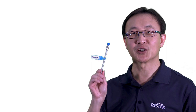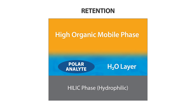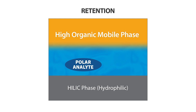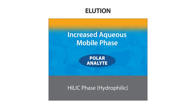So now you get a new HILIC column and are very eager to develop or run a HILIC analysis. What should you do at the very beginning? As we discussed previously, for HILIC-based LC separation, the initial condition is under highly organic mobile phase, to generate a water-rich layer on the surface of the polar stationary phase.